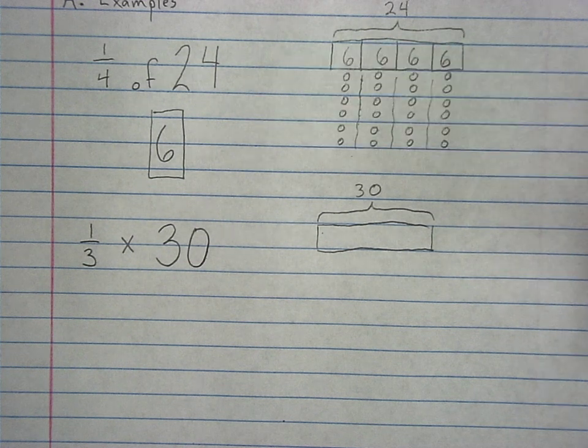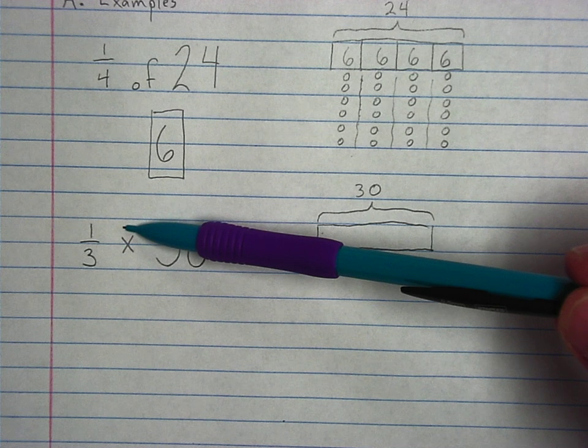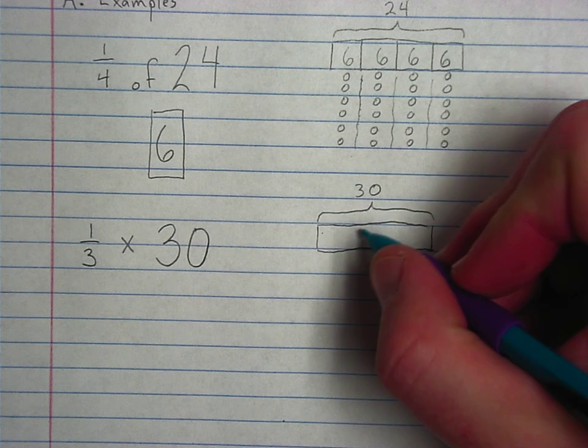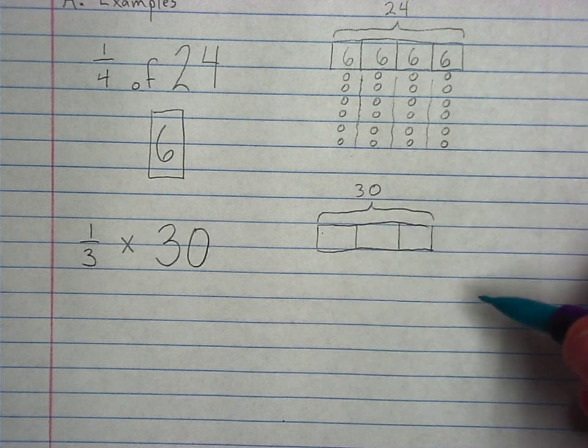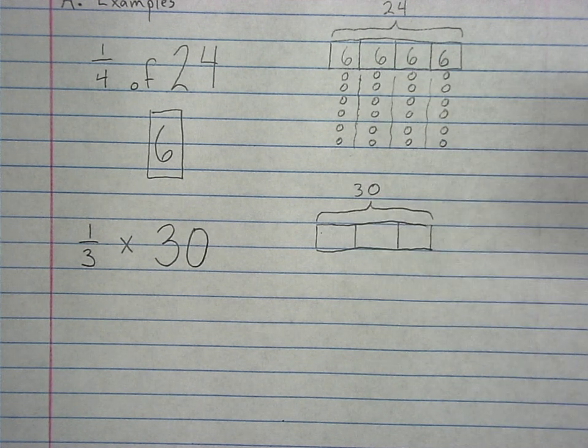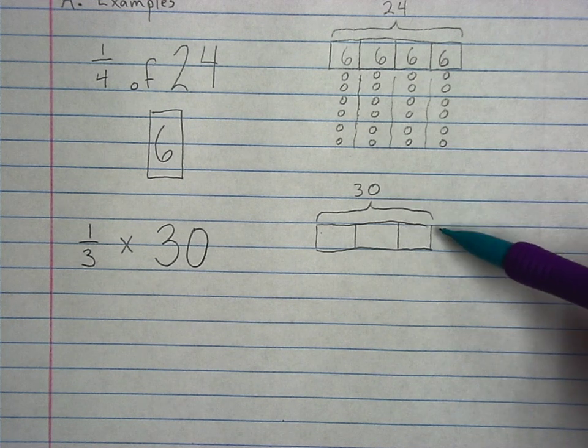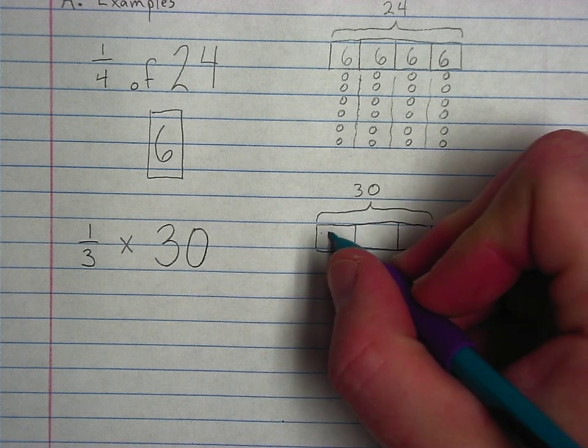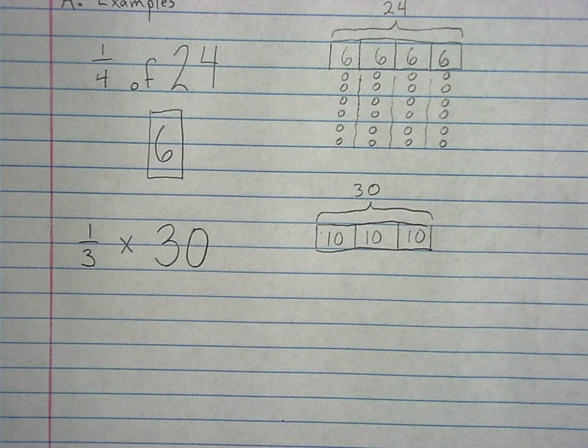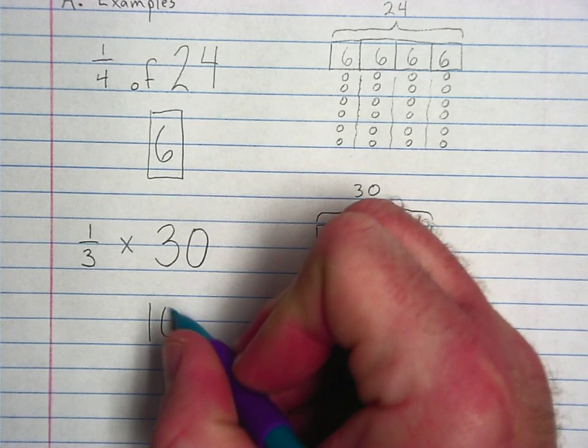So I guess when I said there was no new vocabulary, that was a little bit of a stretch. This might be a new way of thinking about this for some of us. Okay. 1 fourth of 24, 1 third of 30. 1 third. Now, I could put the little dots. I'm not doing 30 little dots. You can if you want, but it's not really necessary. I think most of us know that if we break 30 into three equal parts, 10, 10, 10. Okay. So, 1 third times 30 is 10.